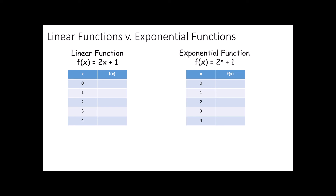There are a couple other things I want to mention about exponential functions. The first is how the exponential function is going to look in table form compared to the linear function. If I stick a 0 into this linear function, 2 times 0 is 0 plus 1 is 1. If I stick a 1 in, 2 times 1 plus 1 is 3. A 2 gives 5, then 7 and 9. Notice that you have a constant rate of growth — I grow by plus 2 every single time. That's a key feature of linear functions: they always grow at a constant rate.